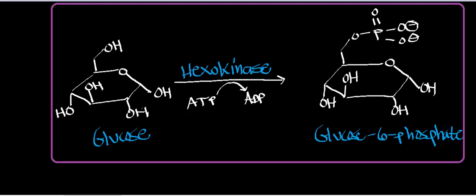Welcome back to the playlist on glycolysis. In the past few videos we've been talking about ATP hydrolysis. We've mentioned how glucose can get into cells, but now we're going to find out what happens when glucose gets into the cell cytosol. This glycolytic playlist is all about glycolysis, and glycolysis occurs in the cytosol — all 10 reactions. There are no nuclear reactions and no mitochondrial reactions. It's all cytosolic.